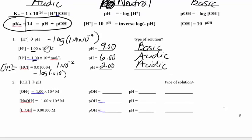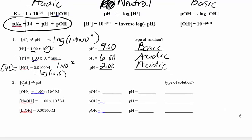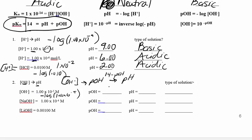To go from OH to pH, these two aren't directly related, so we do it in a couple steps. From the OH, calculate the pOH using negative log of OH, and then calculate pH using 14 minus pOH. For example: negative log of 1×10⁻⁵ gives a pOH of 5, so pH is 9 because 14 minus 5 is 9. That's a basic solution.